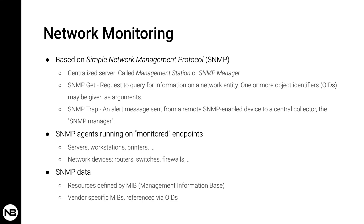For an SNMP system to work, you have the server and the SNMP agents that run on monitoring endpoints. This could be servers, workstations, or network devices such as routers or switches. The SNMP data exchanged between the two entities is defined by MIBs, which stands for Management Information Base — essentially a dictionary of queries or records that can be exchanged between the two systems.